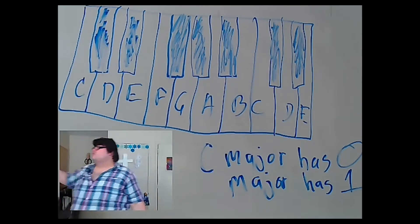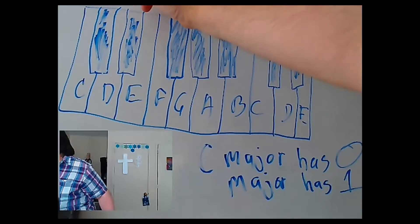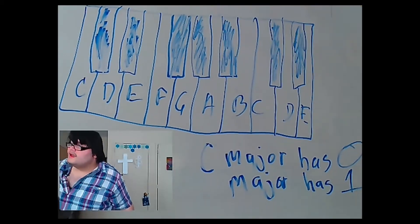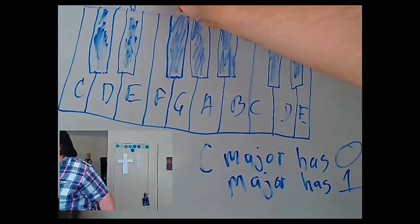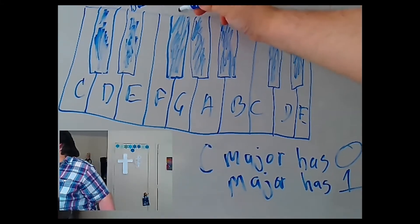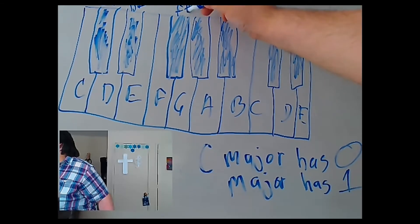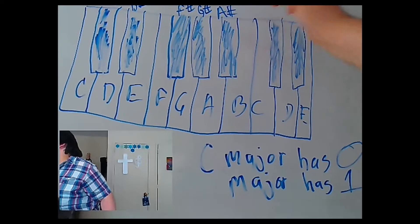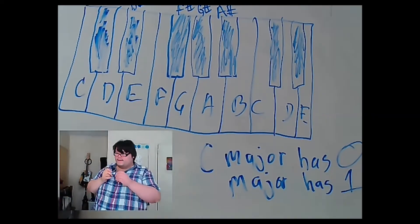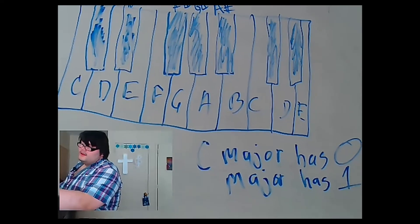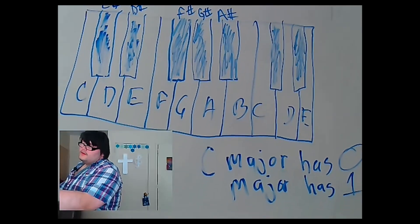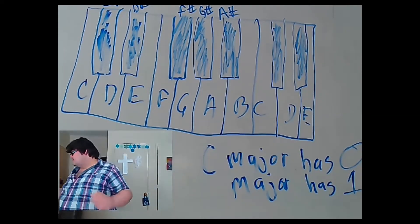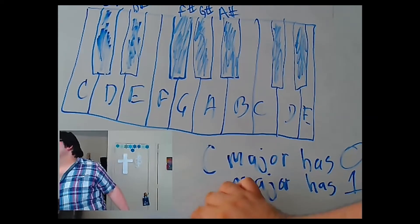I'm also going to write the sharps on top. So if you have C sharp, D sharp, F sharp, G sharp, and A sharp — let me increase it just a little so you can see everything. There you go, now you can see everything.